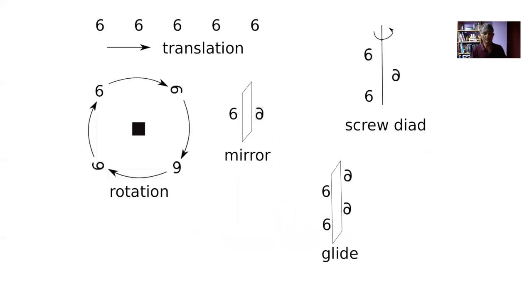This illustrates the operation of a tetrad — a four-fold axis of symmetry. If I rotate by 90 degrees I recover the structure, and this is a mirror plane.